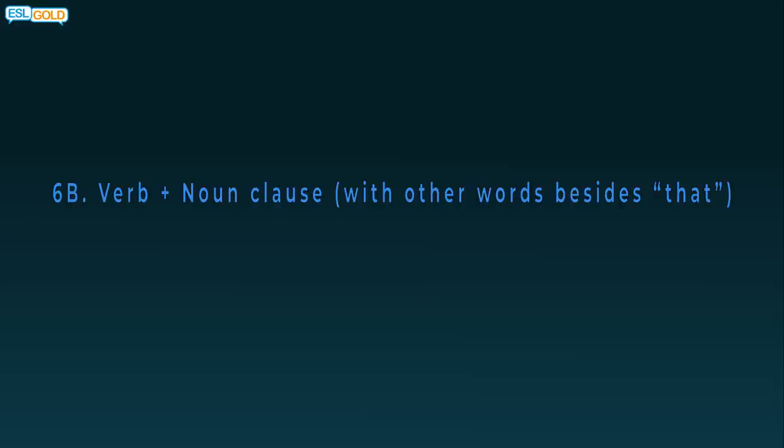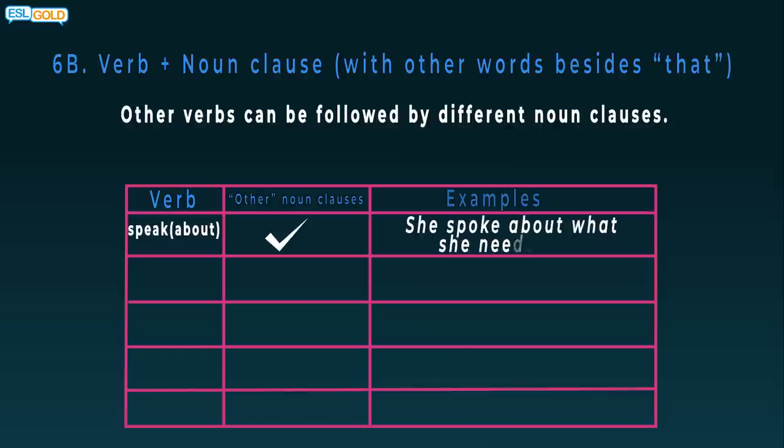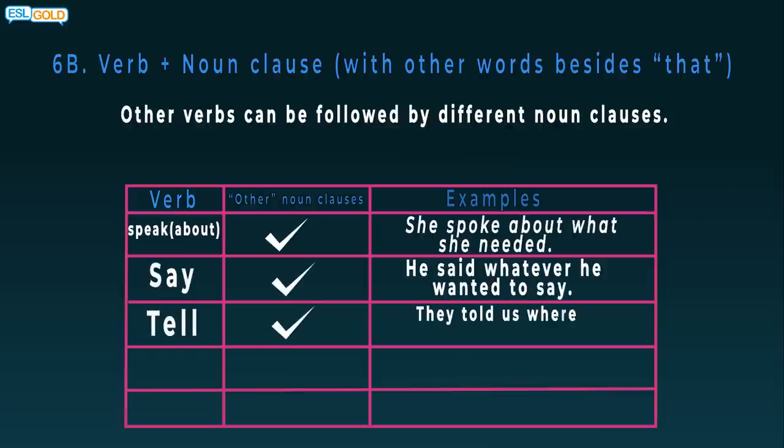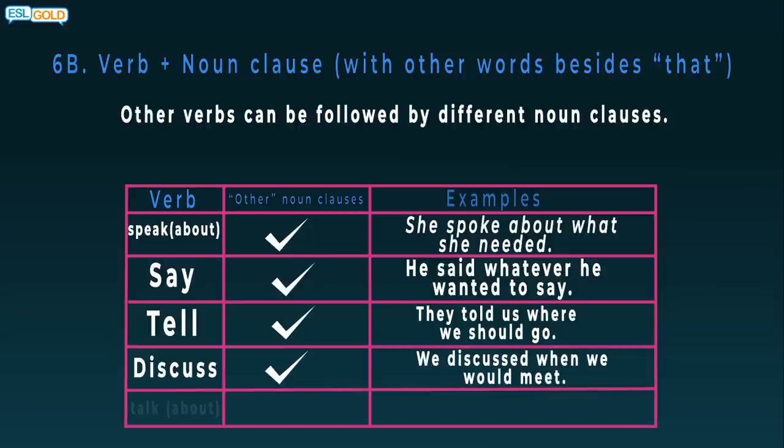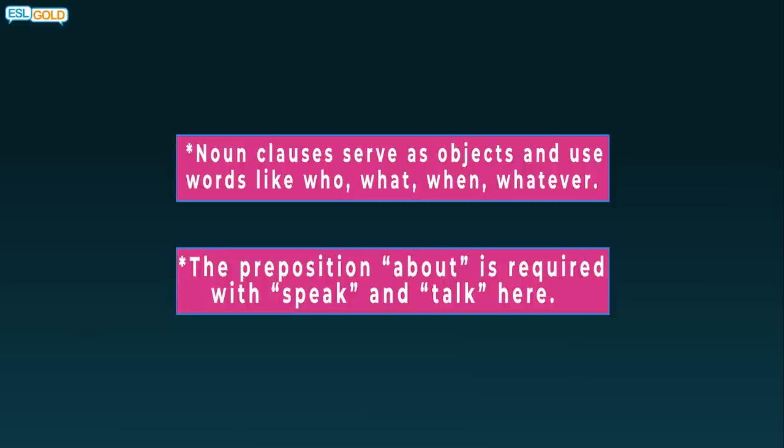6b. Verb plus noun clause with other words besides that. Other verbs can be followed by different noun clauses. Speak about: yes. She spoke about what she needed. Say: yes. He said whatever he wanted to say. Tell: yes. They told us where we should go. Discuss: yes. We discussed when we would meet. Talk about: yes. I talked about how I met my wife. Noun clauses serve as objects and use words like who, what, when, whatever. The preposition about is required with speak and talk here.